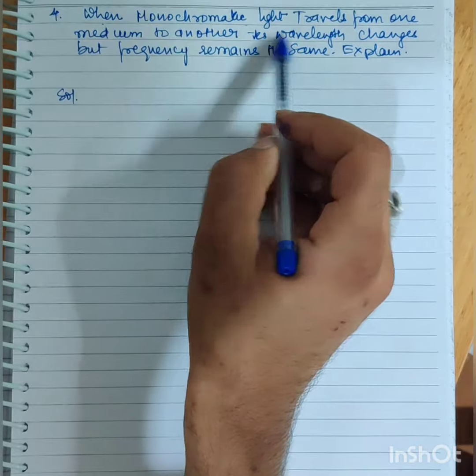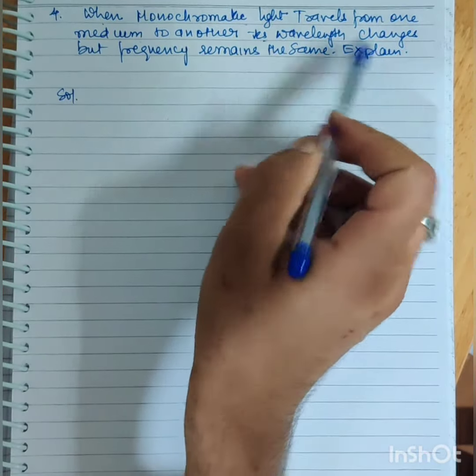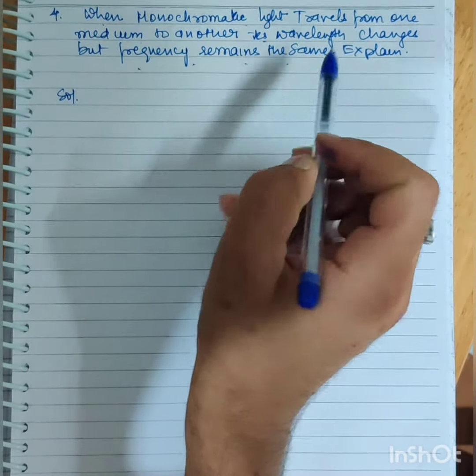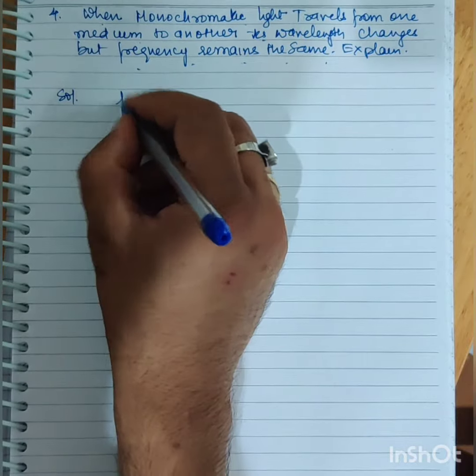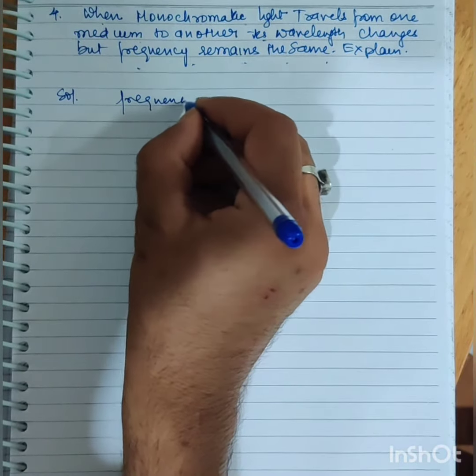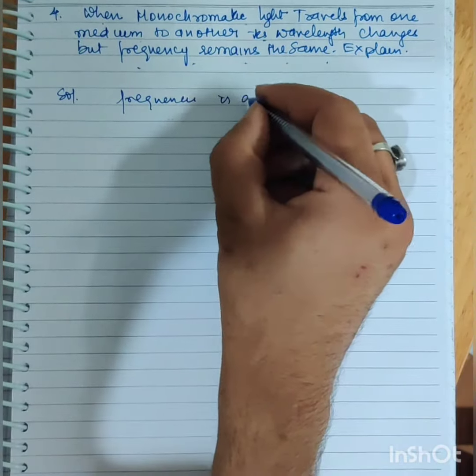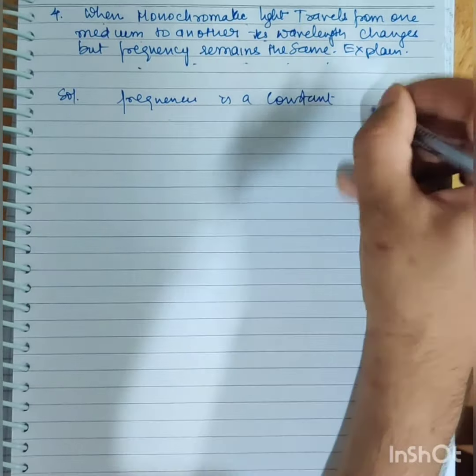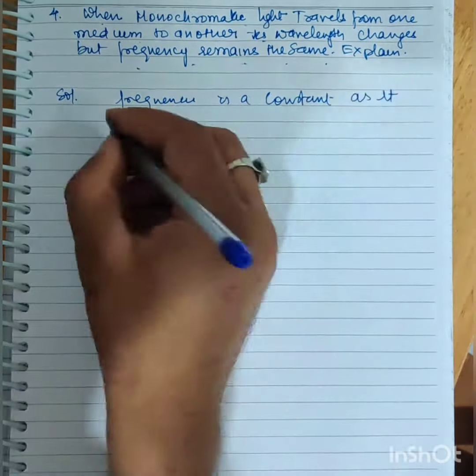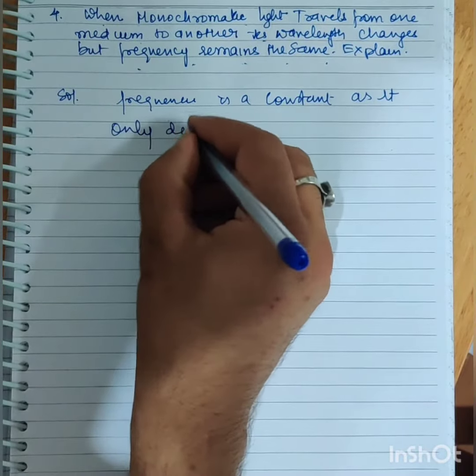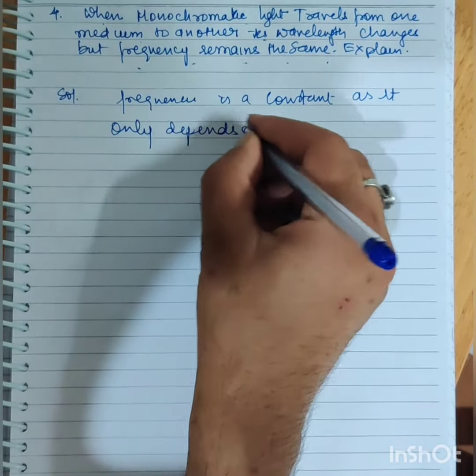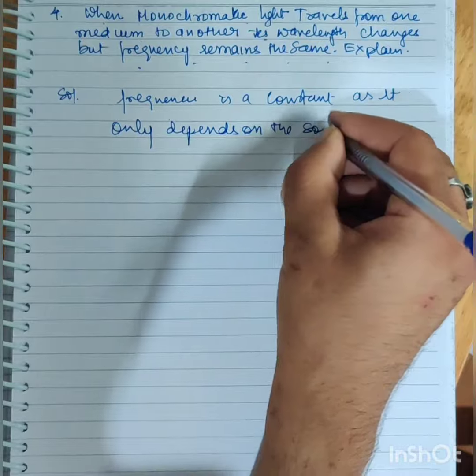When monochromatic light travels from one medium to another, its wavelength changes but frequency remains the same. Explain. Frequency is a constant as it only depends on the source producing it.